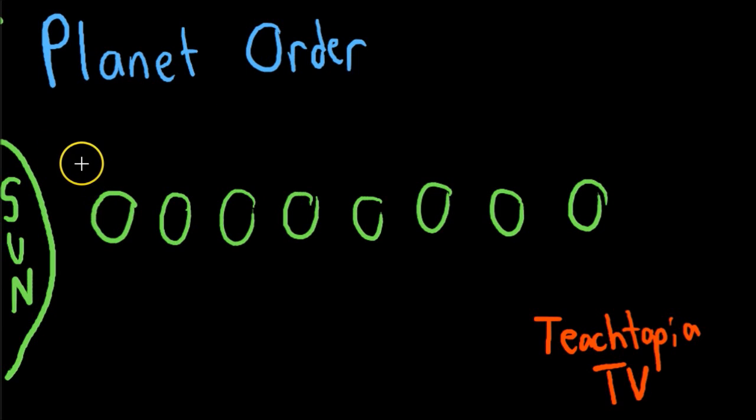So let's start. The first planet we have is what? Well, if you're watching this video, you might need some help. So the first planet is Mercury.